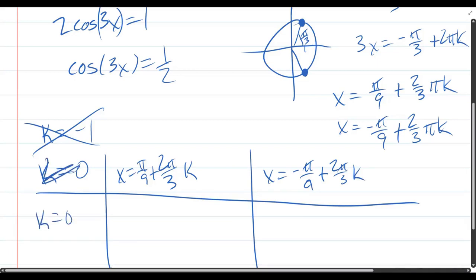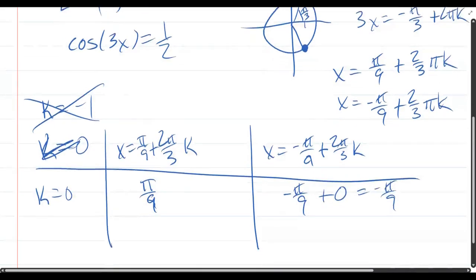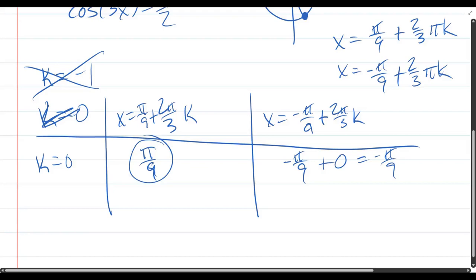We have k equals 0 here. This is just pi over 9. The next one's negative pi over 9, which looks bad. When k is 0, it's negative pi over 9, which is bad. So k equals 0 gives us one solution.